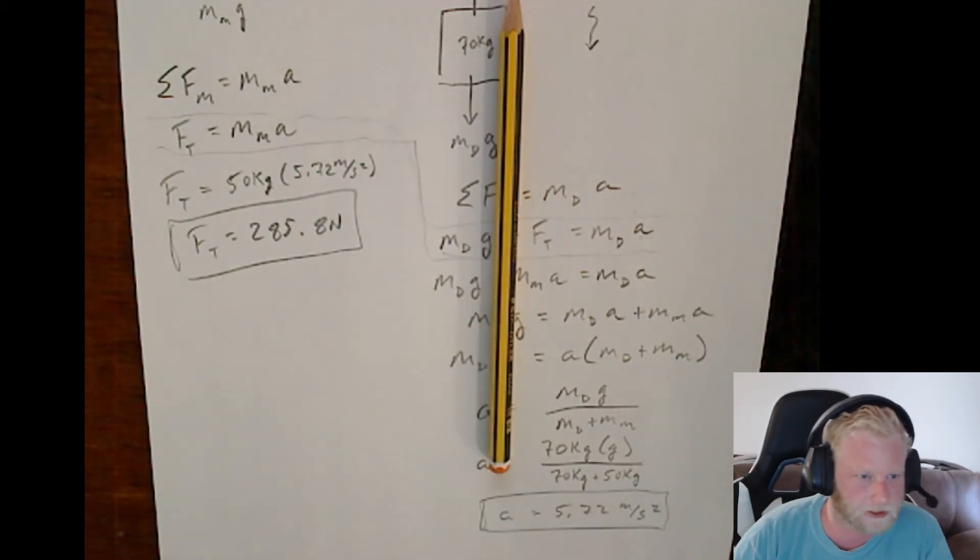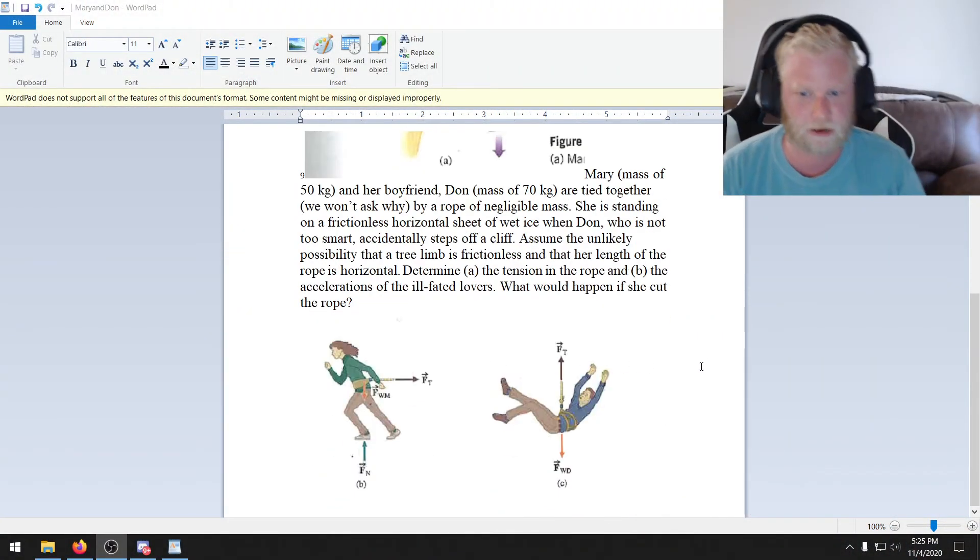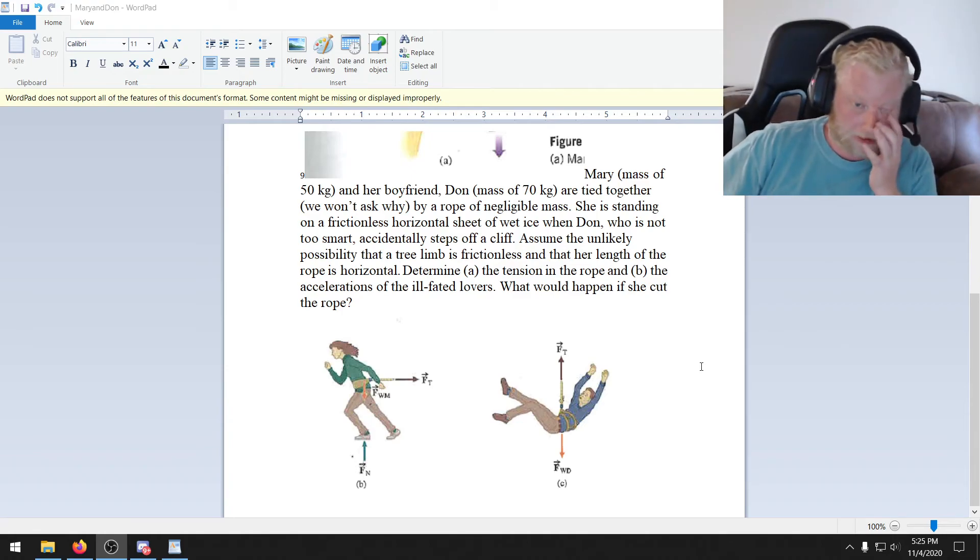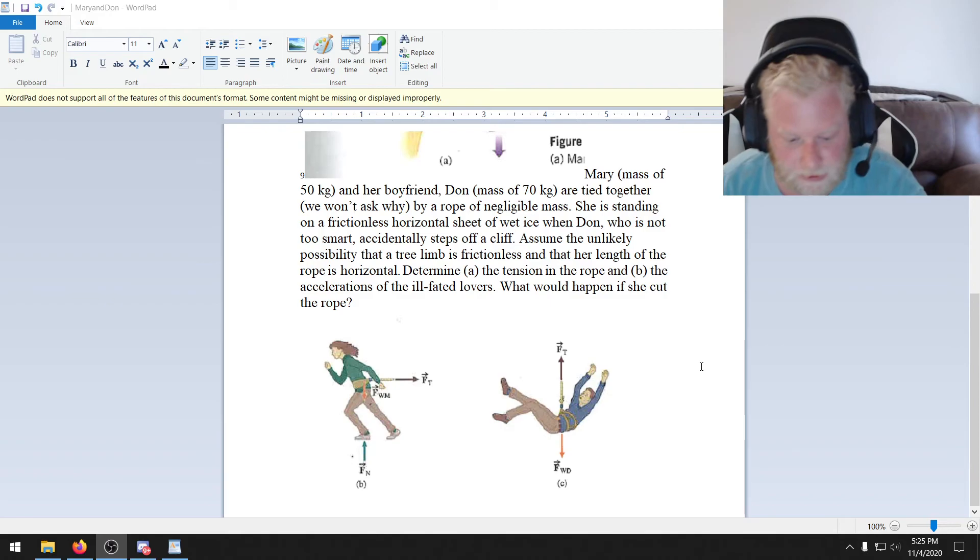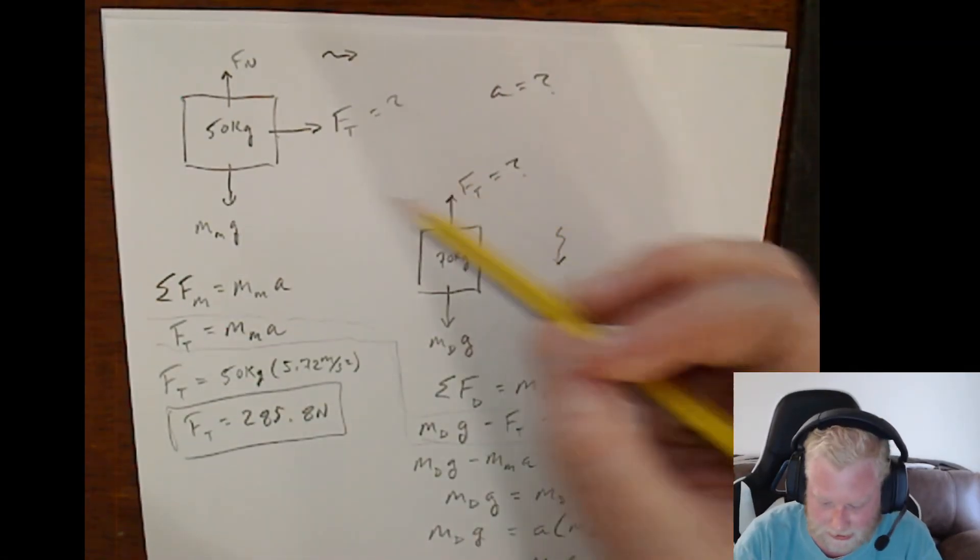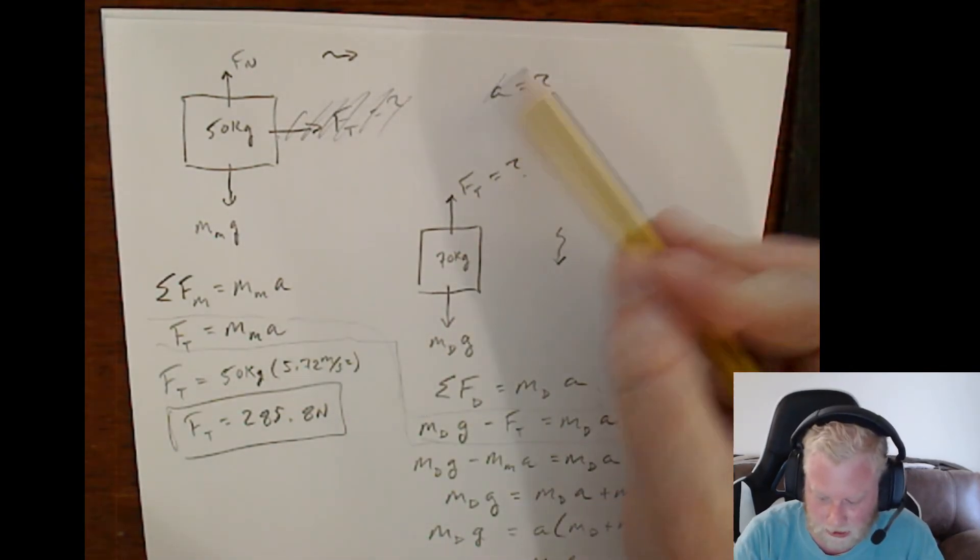So, now, the last portion asks us what would happen if she cut the rope. Well, if Mary cuts the rope, Don's going to fall, obviously. But what's going to happen to Mary? Well, if she cuts that rope, that tension force here is now gone. Meaning that she'll no longer be accelerating.